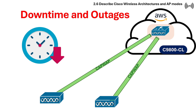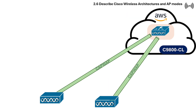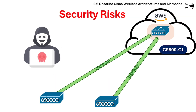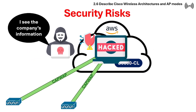Another disadvantage is downtime and outages — cloud providers can experience outages leading to disruptions in the wireless network and potential loss of access to services. A main concern is also security risk: cloud controllers process traffic outside the organization's network, making it more susceptible to hacking and data breaches, potentially exposing sensitive information.